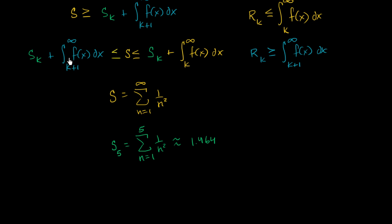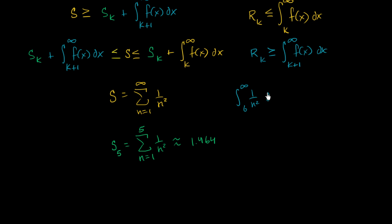Now let's evaluate each of the integrals. Our k in this case is five — I just picked that arbitrarily. We would get a better estimate with a higher k, like ten or twenty terms, and a worse estimate with k equals three. But k equals five seems reasonable and computable. So let's evaluate the integral from k+1 equals six to infinity of one over n squared dx.